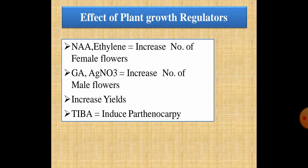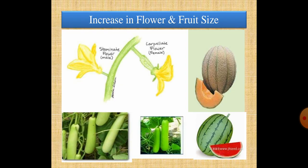In summary: NAA and ethylene increase female flowers; GA3 and silver nitrate increase male flowers as well as yield. TIBA (triiodobenzoic acid) induces parthenocarpy. The time of application of plant growth regulators is the 2 to 4 leaf stage — when the plant is at the 2 or 4 leaf stage, if GA is applied it increases male flowers, and if ethylene is applied it increases female flowers.